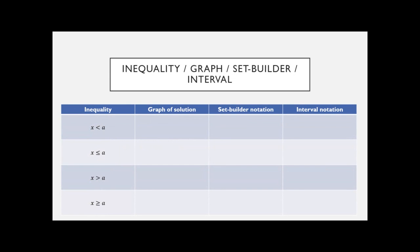Here's the setup: A in all of these inequalities is just any number. So if you have x less than 2 or x less than 10, you can go to this chart and it will tell you what the graph looks like, how to write it in set builder notation, and what the interval notation looks like. You can use it as a reference to take an inequality and write its solution.